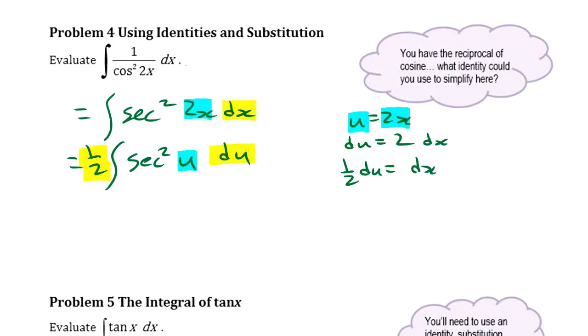So we're all good now. If we evaluate that, integral of secant squared is tangent plus our constant, so we get 1 half tangent 2x plus c.